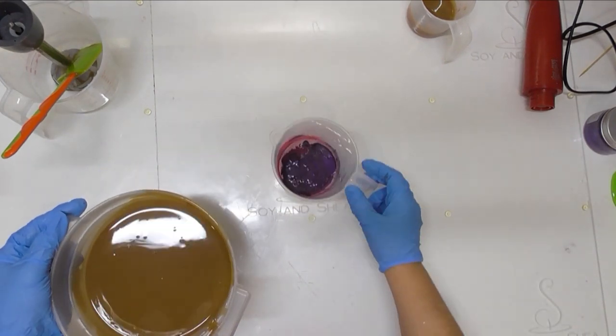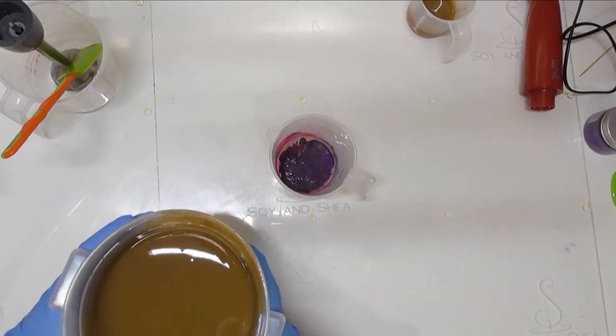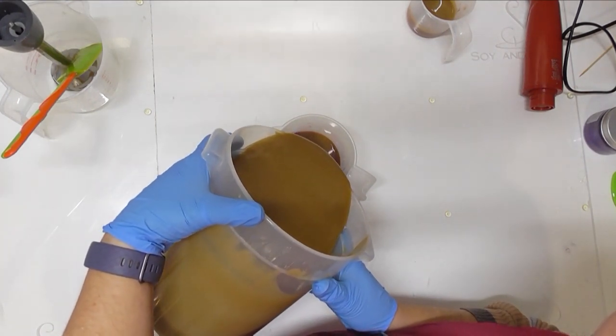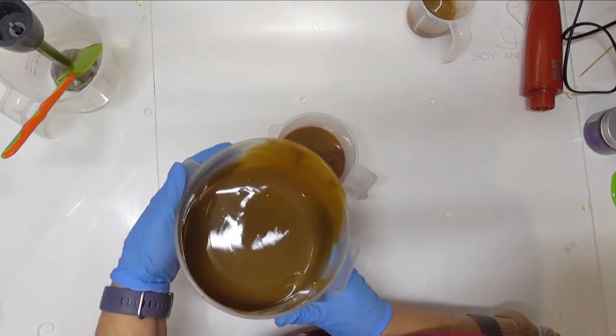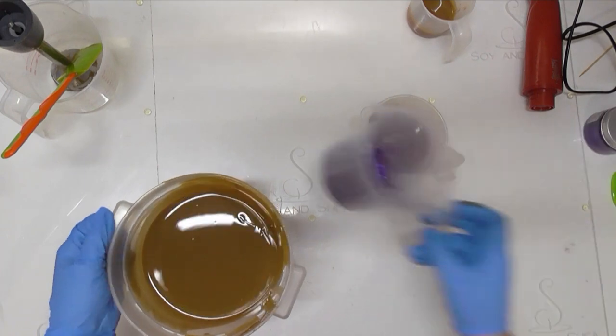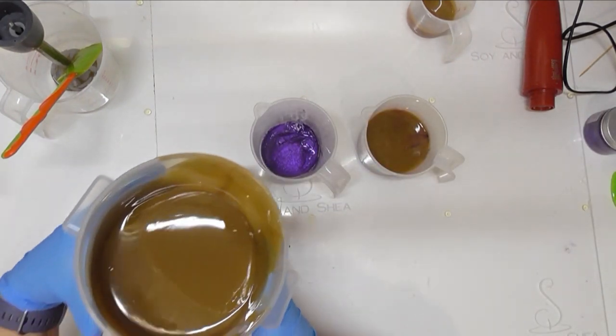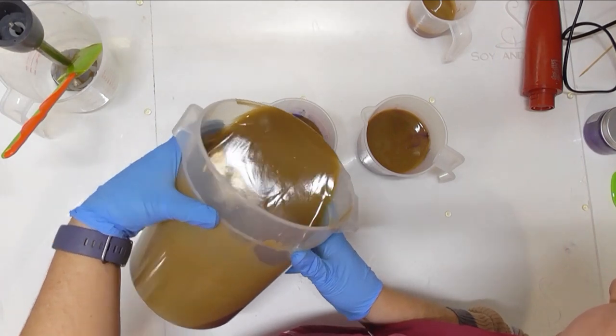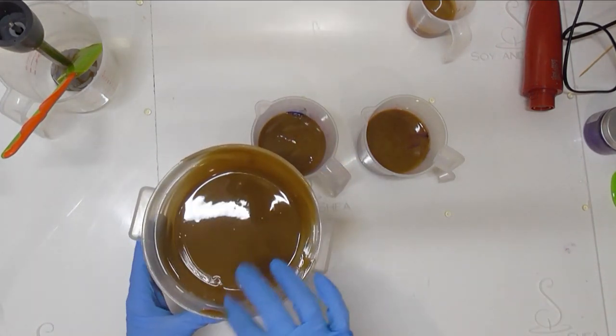Next pot I have here has some Eminence mica mixed in with some Really Red from Nurture Soap. I'll pour that in there and hopefully we'll get a beautiful purple. In this one here I have some Magic Violet, which I have also got in some titanium dioxide just to try and lighten it up a little bit.